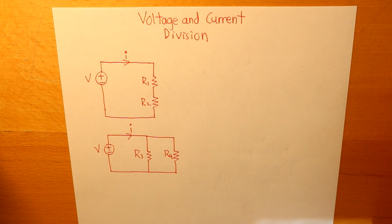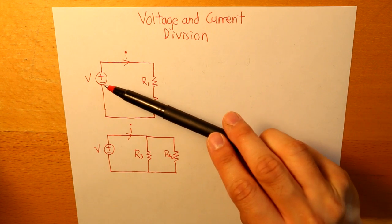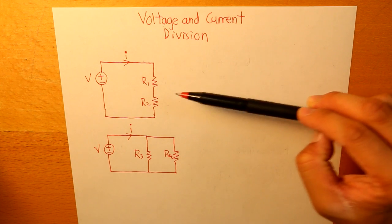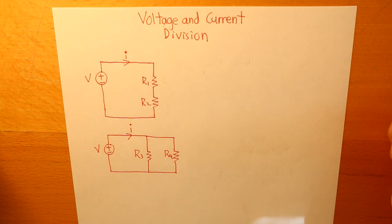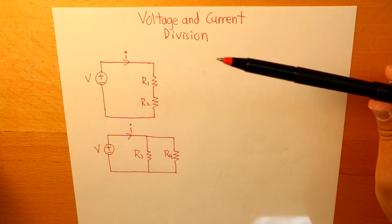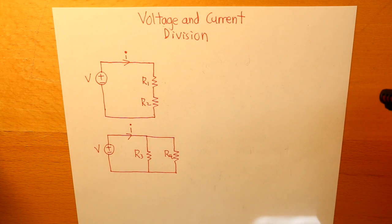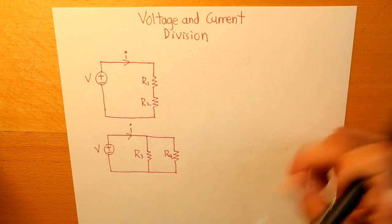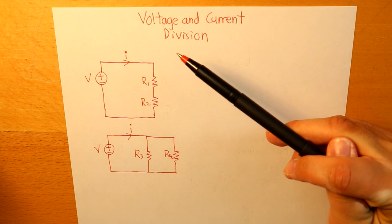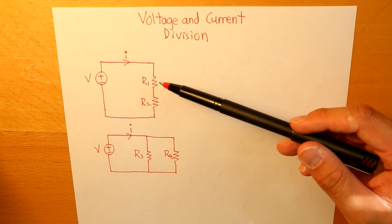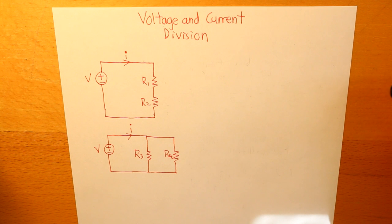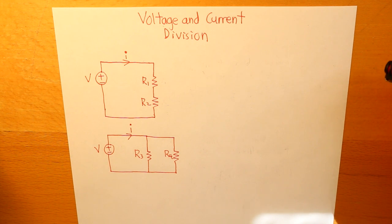Say that we are given an electric circuit and we're already given what the total voltage is — the voltage source — and what the current is flowing through the circuit. Sometimes there's going to be a question asking us what is the voltage and current through each particular resistor. There are two basic ways resistors are formed: either in series or in parallel, or a combination of both. If you don't know what resistors in series and parallel are, I recommend checking out my previous videos.